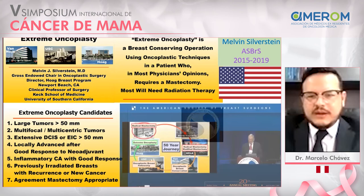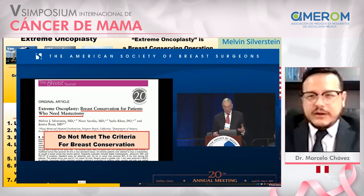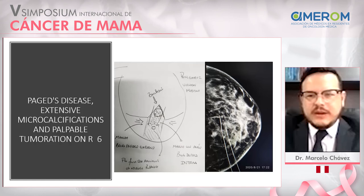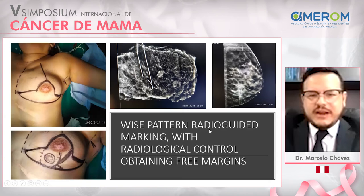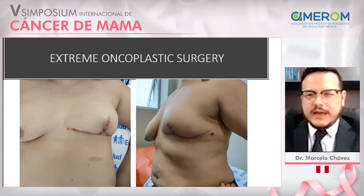This is a challenging type of surgery that we have attempted at the National Hospital. This patient had Paget's disease with extensive microcalcifications and a nipple tumor. We performed a resection using a one-step radioguide approach to excise all microcalcifications and the nipple tumor en bloc. We achieved free margins, and the patient was happy to save her breast.